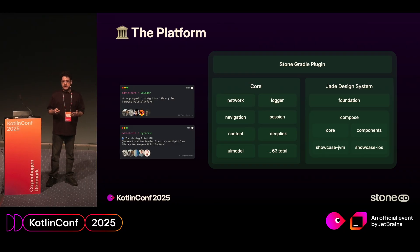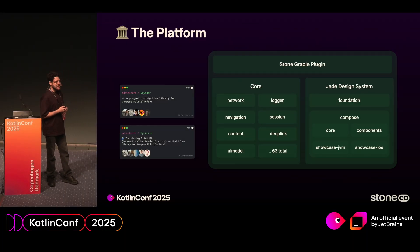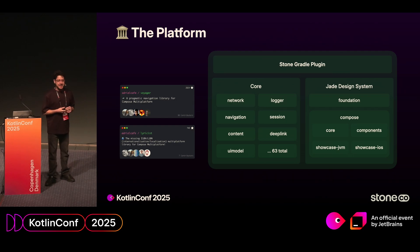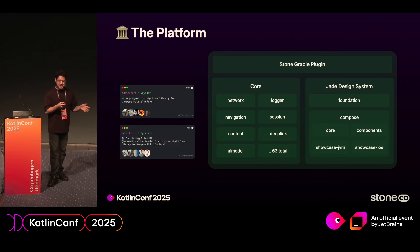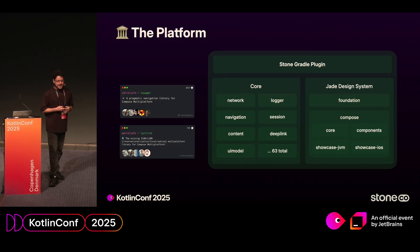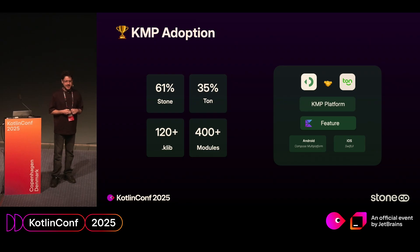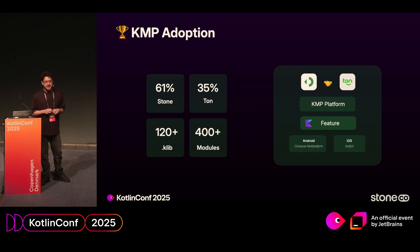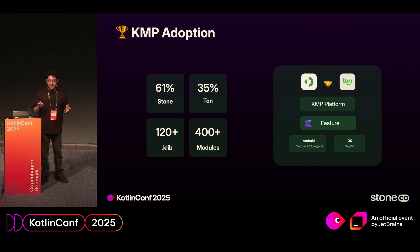Our efforts also generated two open-source projects you might know. The first is Voyager, a navigation library for Compose and Multiplatform, and also Lyricist, an internationalization and localization library for Compose and Multiplatform. It's hosted under Adriel's repository, one of the minds behind our design system. From that, we started adopting KMP, and this is how it looks like today. We build features only once in Kotlin, leverage our platform, and share code between our two main applications. On Android we're using Compose Multiplatform, and on iOS we're using SwiftUI.